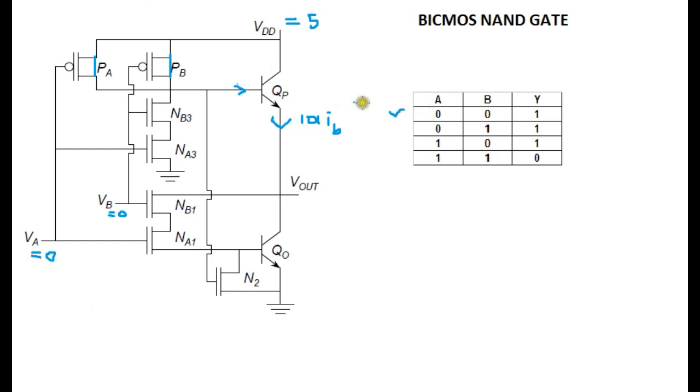When we give two low inputs, PA and PB will get turned on, whereas these two NMOS transistors will not get turned on, means they will be in the OFF state. PA and PB will be in ON state, meaning the current flows. QP will get turned on, and when this will get turned on, there will be an emitter current.